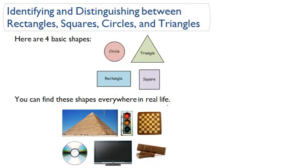If you look at the picture below, you can see that you can find these shapes, these four basic shapes, everywhere in real life. For example, a pyramid—the faces of a pyramid are made up of triangles, and its base, the bottom of the pyramid, is made up of a square.